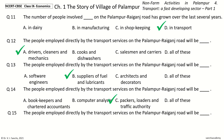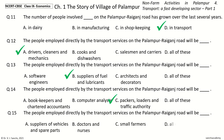Question 15 (Last question): The people employed directly by the transport services on the Palampur-Raiganj road will be dash. The options are: Suppliers of vehicles and spare parts, Doctors and nurses, Small farmers, All of these. And the answer is Suppliers of vehicles and spare parts.